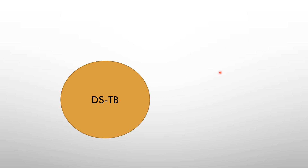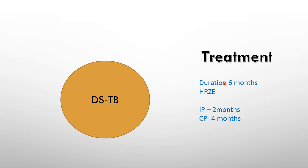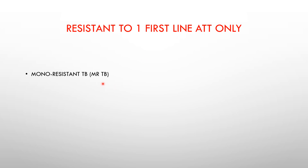DSTB are those patients who show no resistance to any of the TB drug regimen. The treatment is a duration of six months with isoniazid, pyrazinamide, ethambutol — with an intensive phase of two months and a continuous phase of four months. The other terminology covers those who show resistance to one first line ATD — they are the mono-resistant TB cases. Under this also comes isoniazid resistant TB, and polydrug resistant TB in which patients show resistance to more than one first line ATD apart from isoniazid and rifampicin.